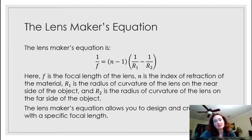F is the focal length. N is the index of refraction of the material that you make the lens out of. R1 and R2 are the radii of curvature of either side of the lens — they can, of course, be different.